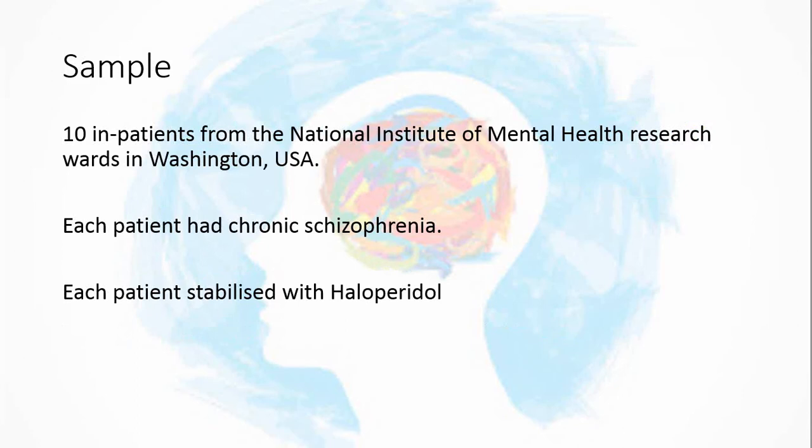The sample consists of 10 patients from a mental health institute in Washington, America. They're inpatients, so they live and stay there all the time. Each patient is diagnosed with chronic schizophrenia, which impacts their day-to-day ability to live a normally functioning life. However, they have been stabilised and given a drug called haloperidol to stabilise their symptoms, so we shouldn't see any symptoms of schizophrenia in their behaviour, though they do have it as an underlying condition.